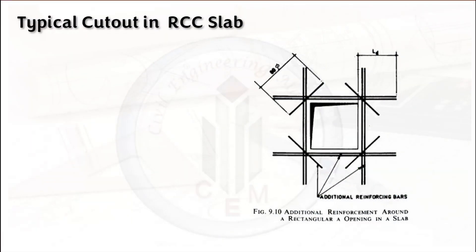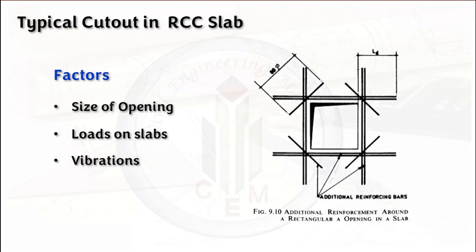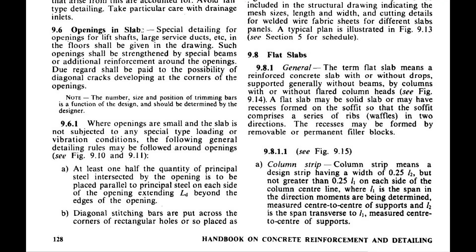Detailing of openings in slabs is based on factors like size of openings, loads on slabs, and floor vibrations. Now let's look into code SP34, which is the handbook on concrete reinforcement and detailing. In clause 9.6 we have openings in slabs. We need to consider special detailing for openings for lift shaft, large service ducts, and so on. Such openings shall be strengthened by special beams or additional reinforcement around the openings, so that we can avoid diagonal cracks developing at the corners of the openings.